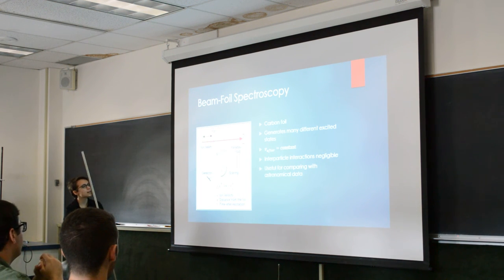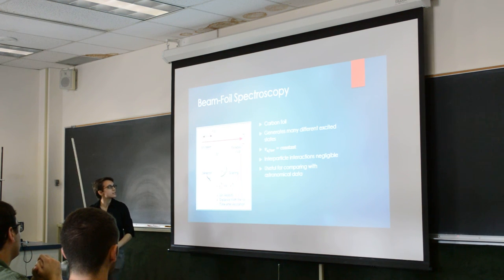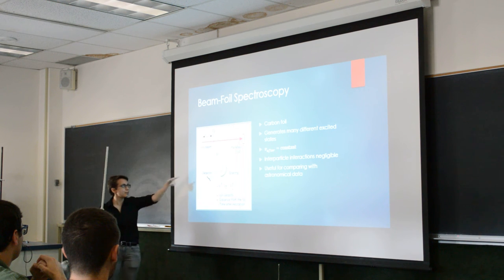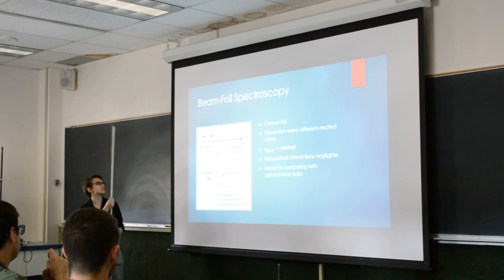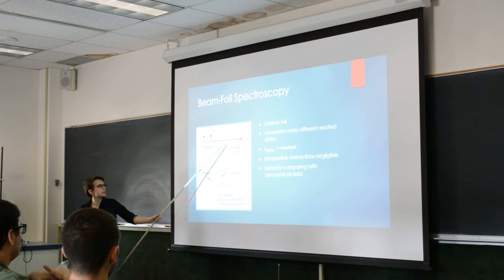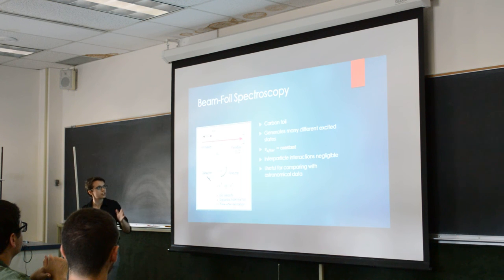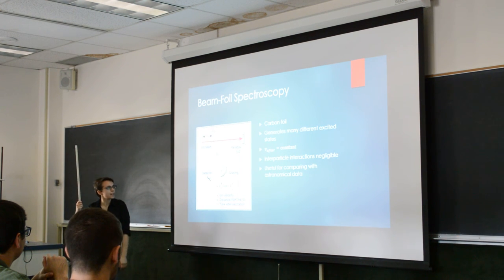Another key point is that the velocity of the beam after the foil is constant, because that means that the distance past the foil and the time that the atom has spent in its excited state are linearly related. That means that by changing the distance between the foil and the slit, you can essentially change the time that the atoms you are looking at have spent in their excited state, which means you can recreate the exponential curve very easily.